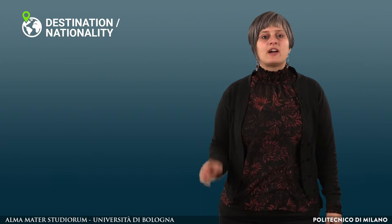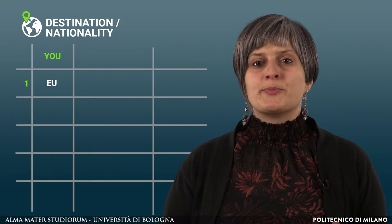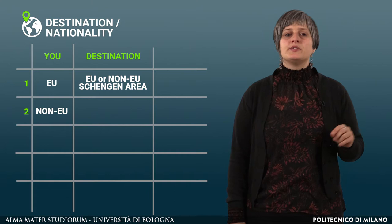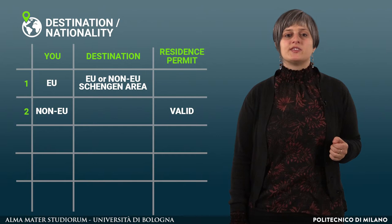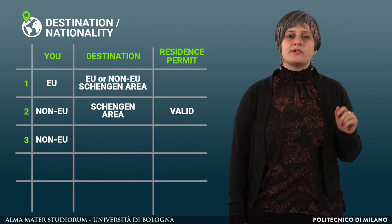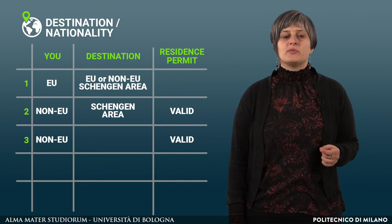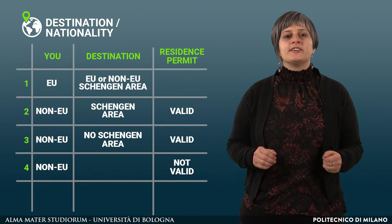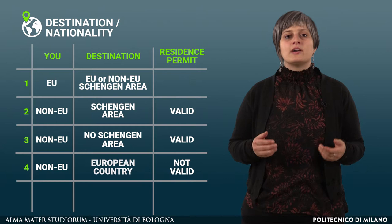Let's start with the first variable, which is the destination of your trip. There are five common scenarios. First scenario: you are a European national and you are going to a European country or to a non-EU country that is a member of the Schengen area. Second scenario: you are a non-EU national, you hold a valid residence permit issued by a European member state, and you are going to a Schengen country. Third scenario: you are a non-EU national, you hold a valid residence permit issued by a European member state, and you are going to a European country that is not a member of the Schengen area. Fourth scenario: you are a non-EU national, you do not hold a valid residence permit issued by a European member state, and you are going to a European country.